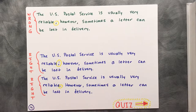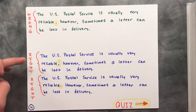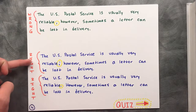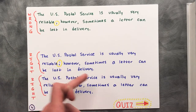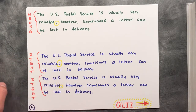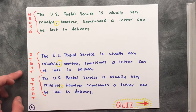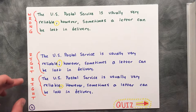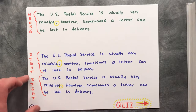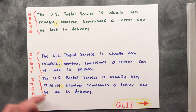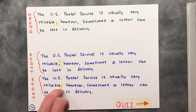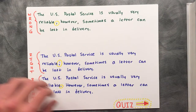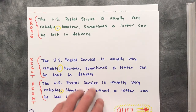Corrected versions of the previous sentence could be: 'The U.S. Postal Service is usually very reliable; however, sometimes a letter can be lost in delivery.' Another correct version is: 'The U.S. Postal Service is usually very reliable. However, sometimes a letter can be lost in delivery.'